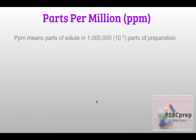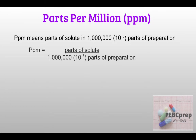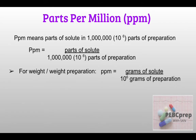We start with the definition of parts per million. PPM means parts of solute in 1 million (10^6) parts of preparation. The formula is: PPM = parts of solute divided by 10^6 parts of preparation. For a weight-by-weight preparation, PPM = grams of solute divided by 10^6 grams of preparation. The numerator and denominator must have the same unit — if kilograms are used, both sides use kilograms.